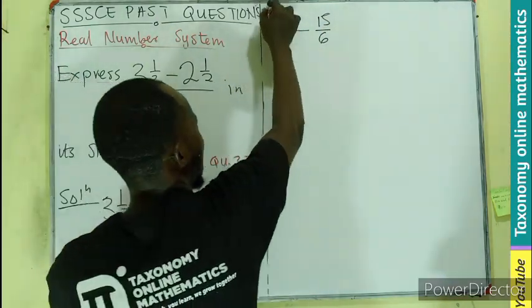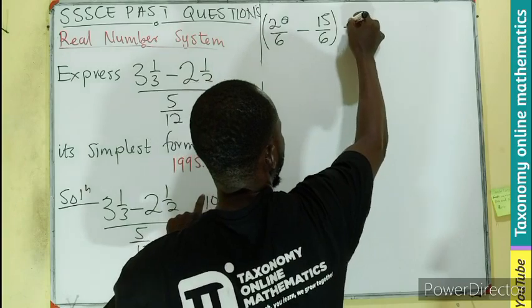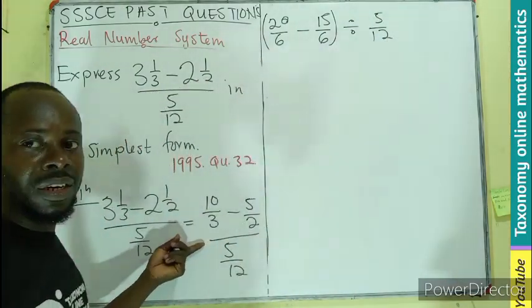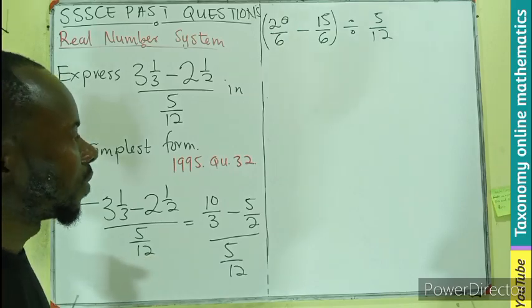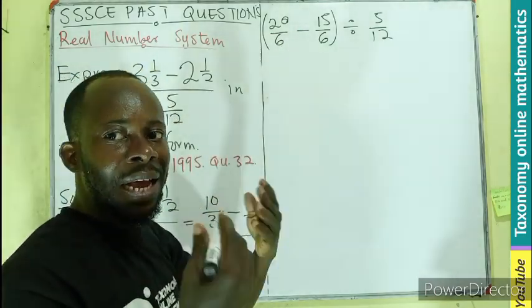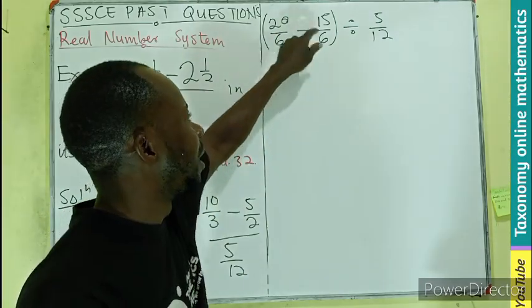Since we are having the same denominator, it becomes a like fraction. You only subtract the numerator, so 20 minus 15 gives us 5 out of 6, then divided by 5 out of 12.